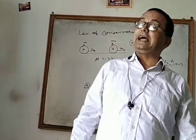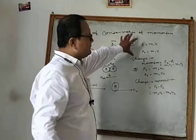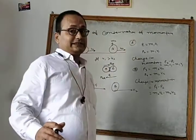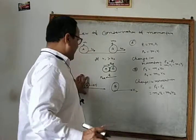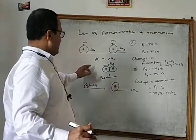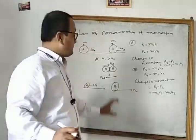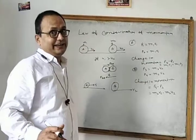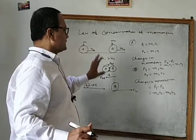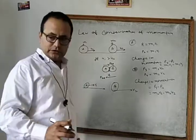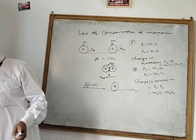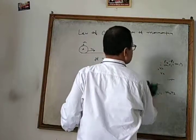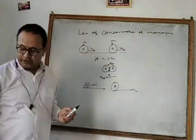Now here the change in momentum gives us force. According to Newton's second law, force FAB on B exerted by A equals the change in momentum M1V1 minus M1U1 upon time T. This is equation 1. Similarly, according to Newton's second law, FBA equals M2V2 minus M2U2 upon T. This is equation 2.